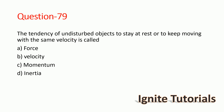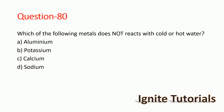Question 78: The tendency of an undisturbed object to stay at rest or to keep moving with the same velocity is called what? It is known as inertia — this is the definition of inertia, so option D is the correct answer.